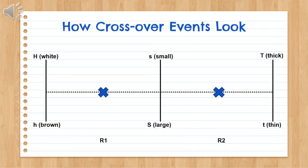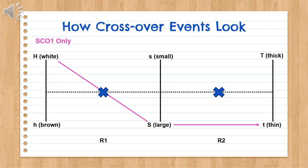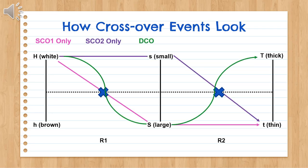Three linked loci allow for four different crossover events to occur: a single crossover at position 1, as shown by the hot pink arrows; a single crossover at position 2, as shown by the purple arrows; a double crossover, as shown by the green arrows; and no crossover, which means we keep the parental gamete types, as shown by the red arrows. Keep in mind, each event produces two different gametes, and only one type is shown for these crossover demonstrations.